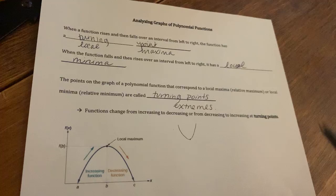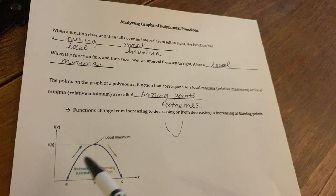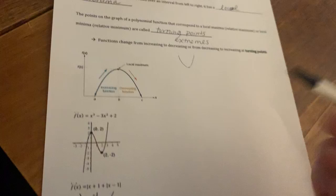Functions can change from increasing to decreasing or from decreasing to increasing at these turning points. So there could be many of them. If you look at the examples, like here's two, here's two, there could be five, there could be ten. We're just keeping it simple, though, as we're learning about them.